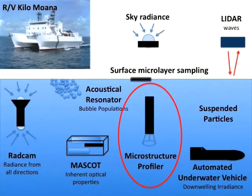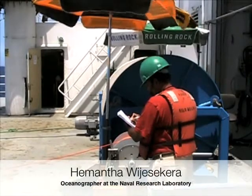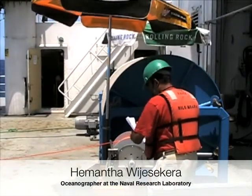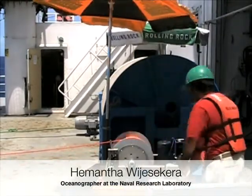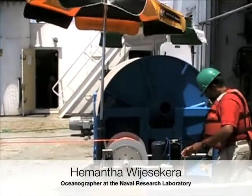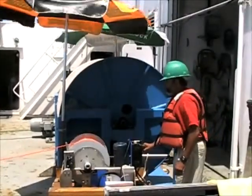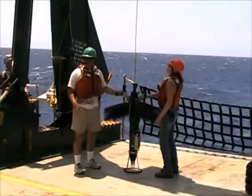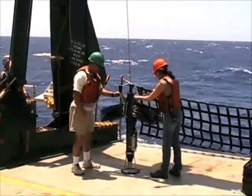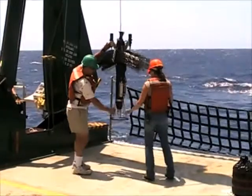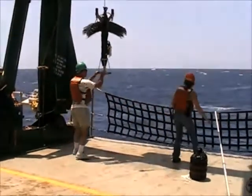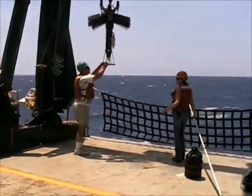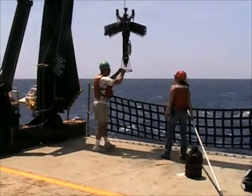Ocean turbulence can also affect light propagation. Hamantha and Scott are investigating the ocean microstructure. Their specific objectives are to examine the vertical distribution of turbulence and irradiance fluctuations in the upper part of the water column. They have two instruments: one profiler that measures turbulence at different depths, and one profiler that carries optical sensors for measuring inherent optical properties and irradiance.